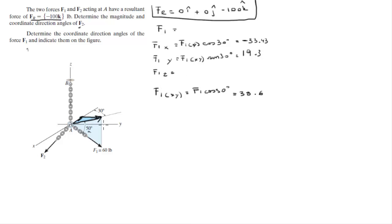Now the z can be found by finding this value, and you find this by doing F1 sine of 50 degrees, this angle given right here, and it's equal to negative 46. So F1 comes out to be negative 33.43 i plus 19.3 j minus 46 k.